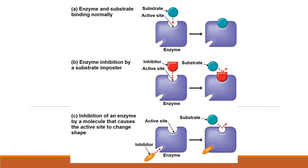Now we're going to talk about how we can inhibit enzymes. Looking at image A, you can see there is an enzyme with its unique shaped active site and the substrate is fitting perfectly, so there's nothing wrong with this image and the reaction is going to proceed.